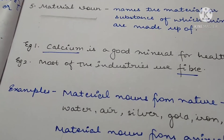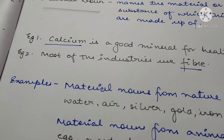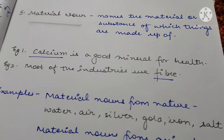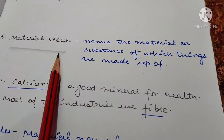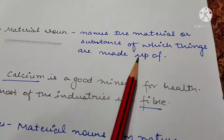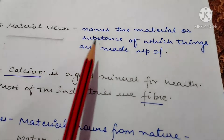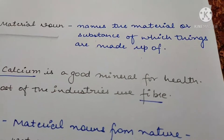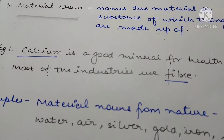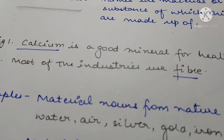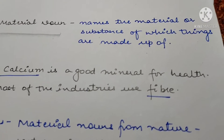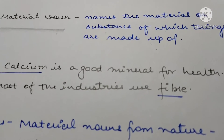Material noun سے آپ کو سمجھ میں آ رہا ہے کسی چیز کے بارے میں — we are talking about material. What do you mean by material noun? Material noun names the material or substance of which things are made up of — یا پھر جس سے چیزیں بنتی ہیں، جس کی help سے چیزیں بنتی ہیں. Those are known as your material nouns.